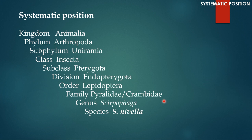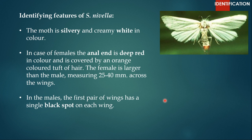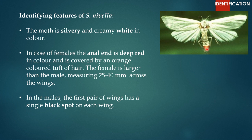To identify Scyrpophaga nivella, check for three points. First is the very distinctive white color — the moth is bright white, silvery or creamy white. Second, for females the anal end is deep red in color and covered by an orange tuft of hair. For males there is one black spot on each fore wing. The female is also a little larger than the male, measuring 25 to 40 millimeters across the wings.